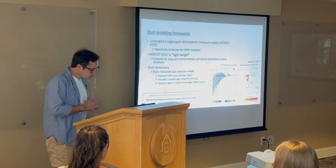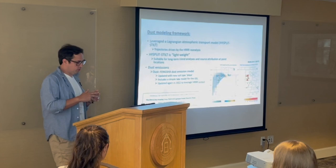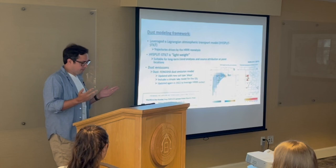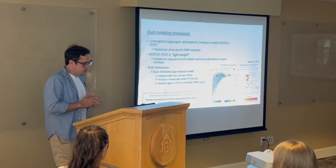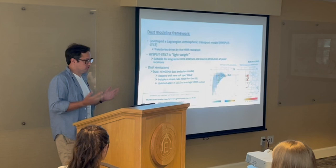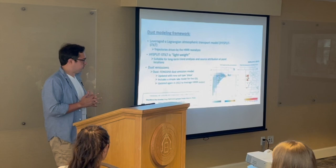We have our trajectory model, and we also use an atmospheric model that provides the trajectory model with winds. This is provided by the High Resolution Rapid Refresh (HRRR) model, which is a really high-resolution meteorological model. We also have to consider dust emissions, so we use the Fengsha dust emission model, and I've made some updates to include soil types such as playa, which is a really important emitter of dust across the Great Basin and the intermountain west.